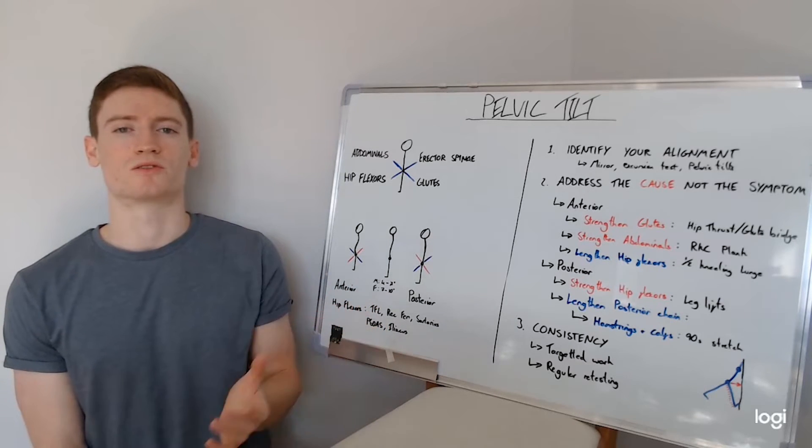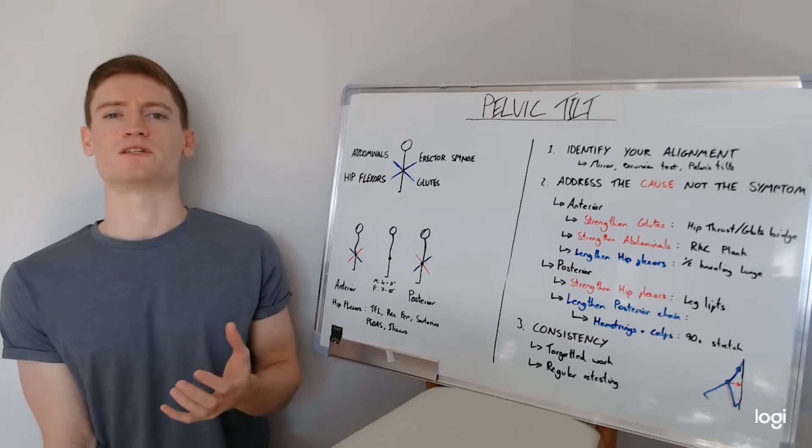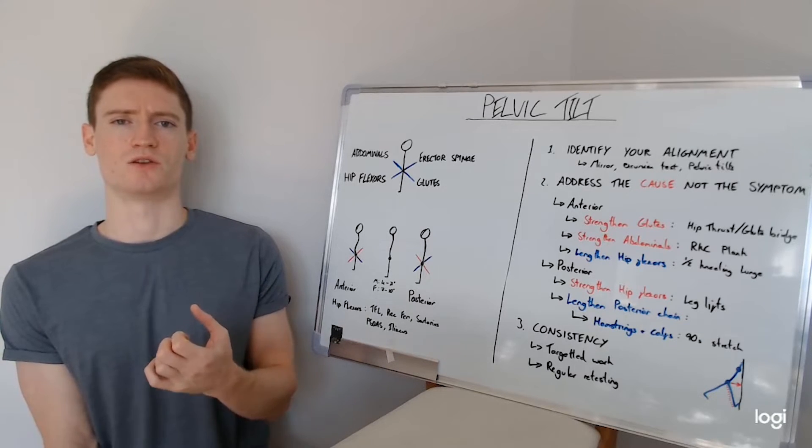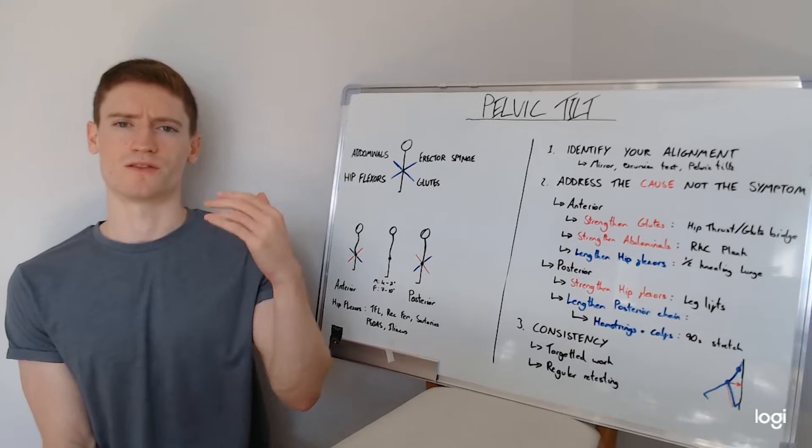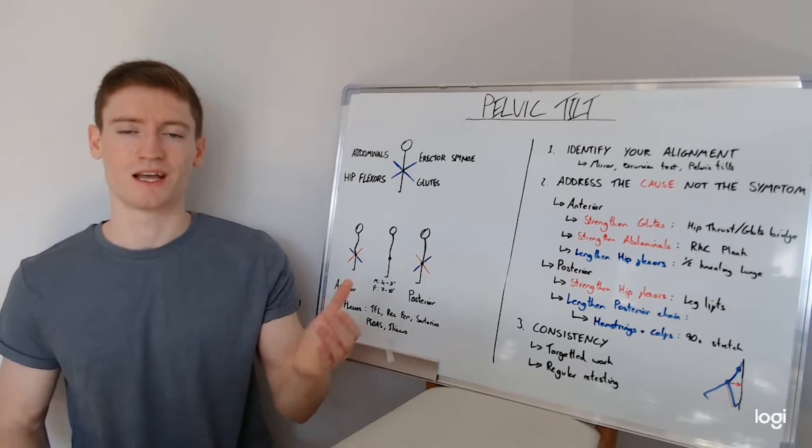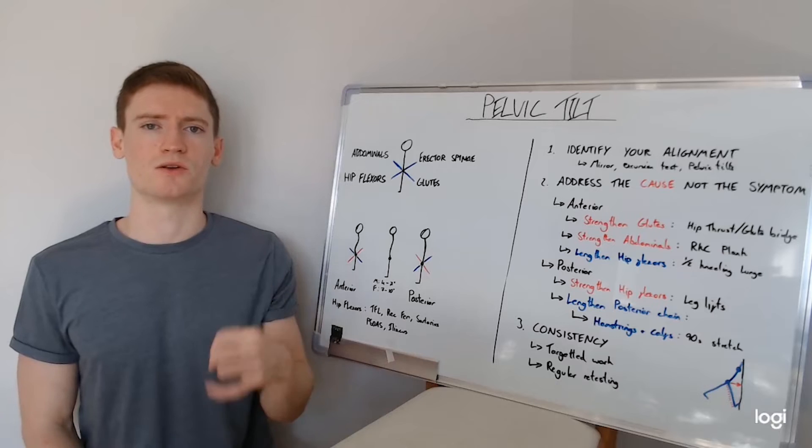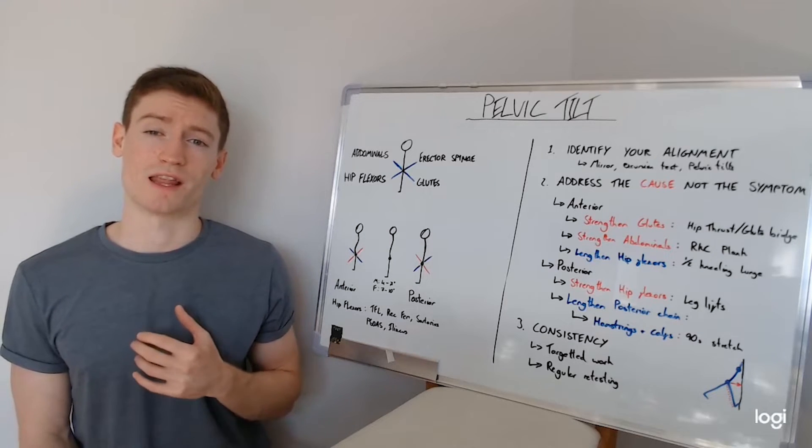So a suitable alternative is something called an RKC plank, where in that position we actively have contraction of the glutes. We also actively have contraction of the lower abdominals, the transverse abdominals, that we can get into that posterior pelvic tilt under load to then challenge you to get stronger in that position.